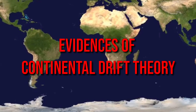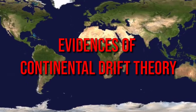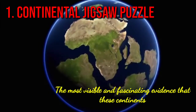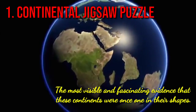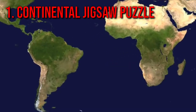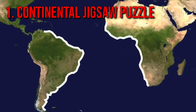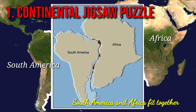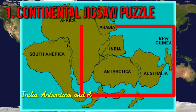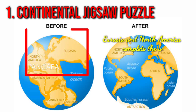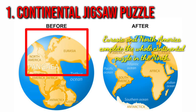To support his claim, Wegener cited evidences of continental drifting. First is the continental jigsaw puzzle — the most visible and fascinating evidence that these continents were once one, based on their shapes. If you cut out pictures of each continent and bring them close together, you will see that the edges surprisingly match. South America and Africa fit together. India, Antarctica and Australia match one another. And Eurasia and North America complete the whole continental puzzle in the north.